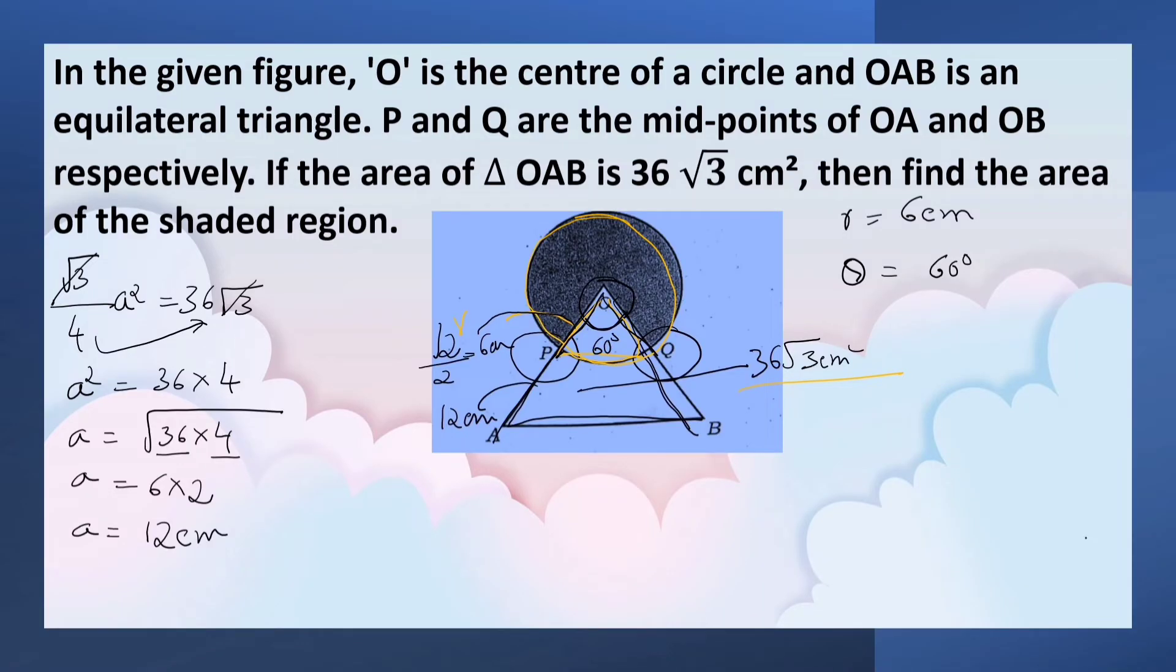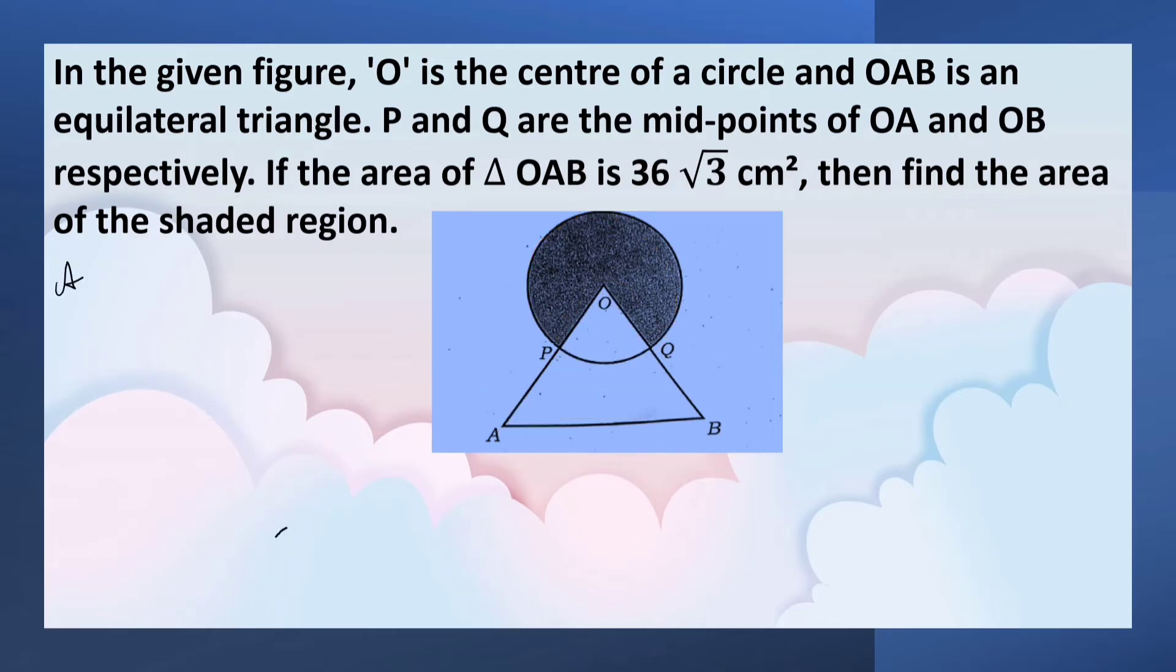Now, we can find the area of the shaded region. We know that area of the shaded region is equal to area of the circle minus area of the sector OPQ. We know that formula for area of the circle is pi r square minus area of the sector OPQ is theta by 360 into pi r square.